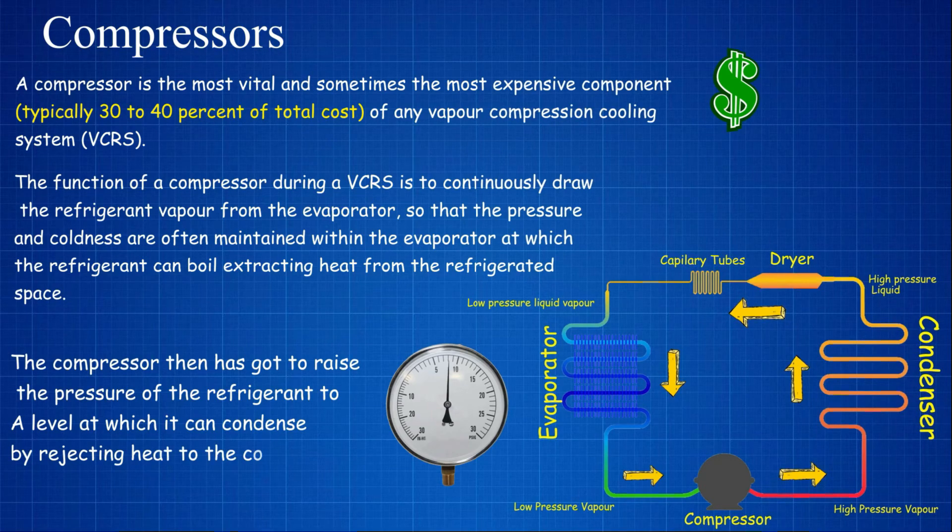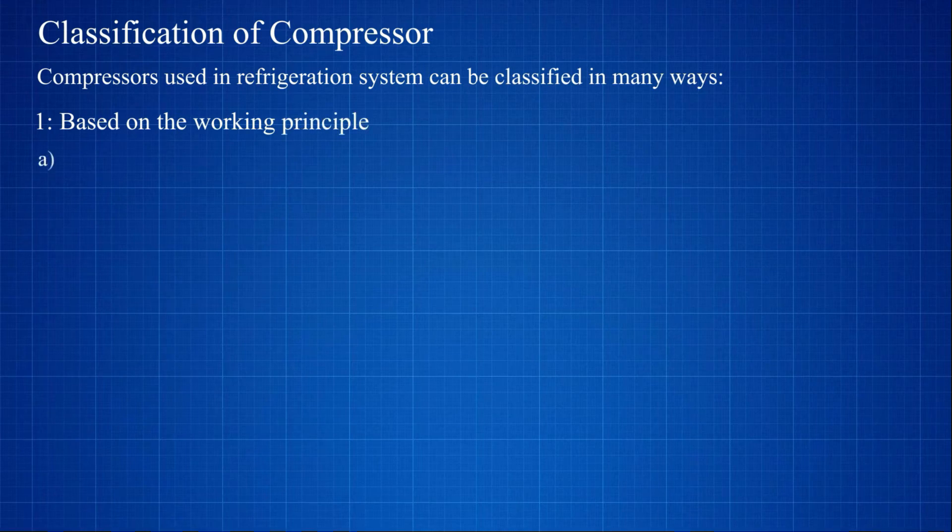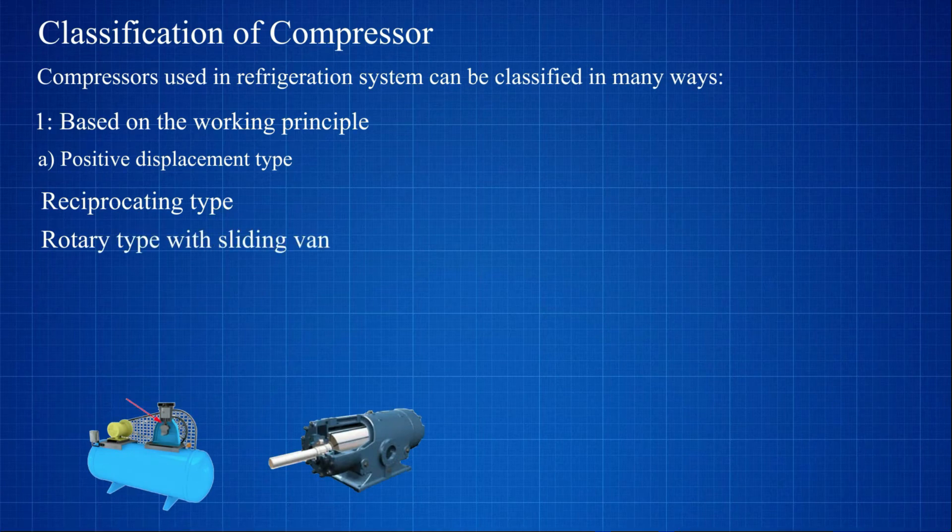Classification of compressor. Compressors used in refrigeration systems can be classified in many ways. One, based on the working principle: a) positive displacement type - reciprocating type, rotary type with sliding vanes, rolling piston type, or multiple vane type.